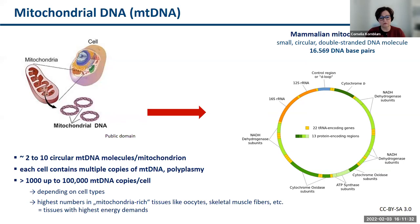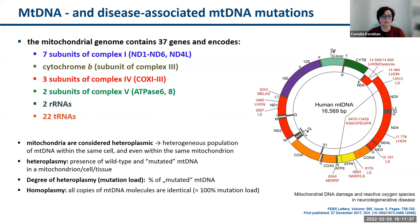The mitochondrial genome consists of 37 genes and encodes seven subunits of complex 1, one subunit of complex 3 (cytochrome B), three subunits of complex 4 (COX subunits 1, 2, 3), two subunits of complex 5 (ATP6 and ATP8), two ribosomal RNAs, and 22 mitochondrial tRNAs.